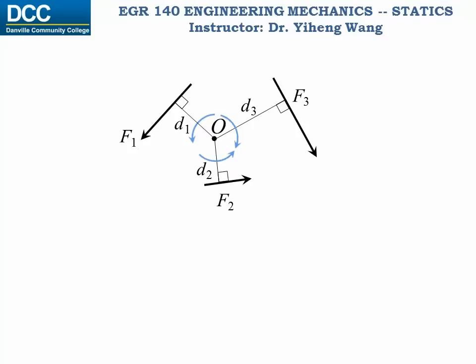The resultant moment caused by multiple forces can be determined by simply adding up the individual moments caused by each force about the same point. For example, the total moment about point O equals F1 times D1 plus F2 times D2 minus F3 times D3. Note that it is minus F3 D3 because F3 is creating a clockwise rotational effect about point O.